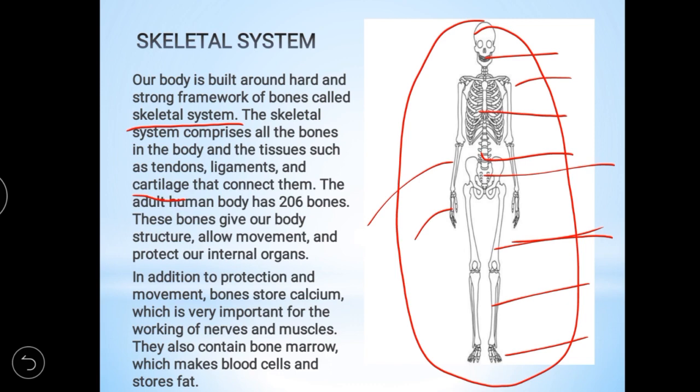The adult human body has 206 bones. These bones give our body structure, allow movement, help us move from one place to another, and protect our internal organs. In addition to protection and movement, bones store calcium, which is important for the working of nerves and muscles.